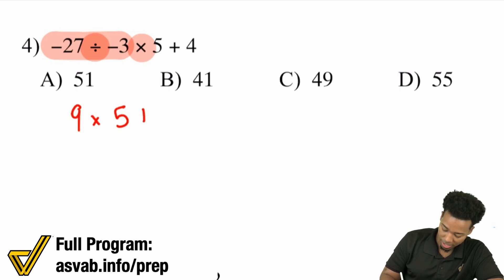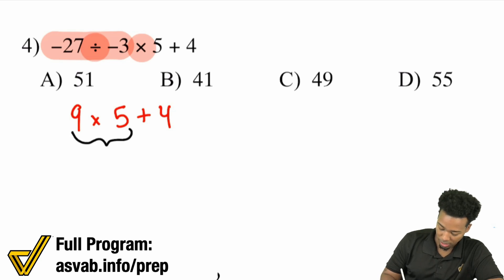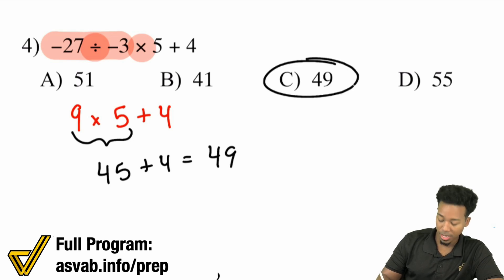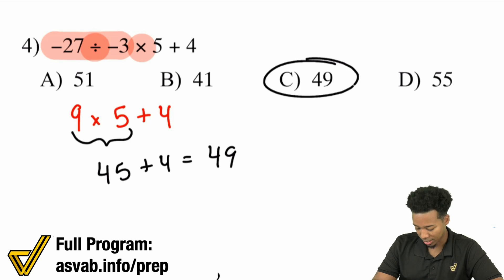So now we have nine times five plus four. Nine times five gives us 45, and 45 plus four equals 49 — that's answer C. Let's keep it going.